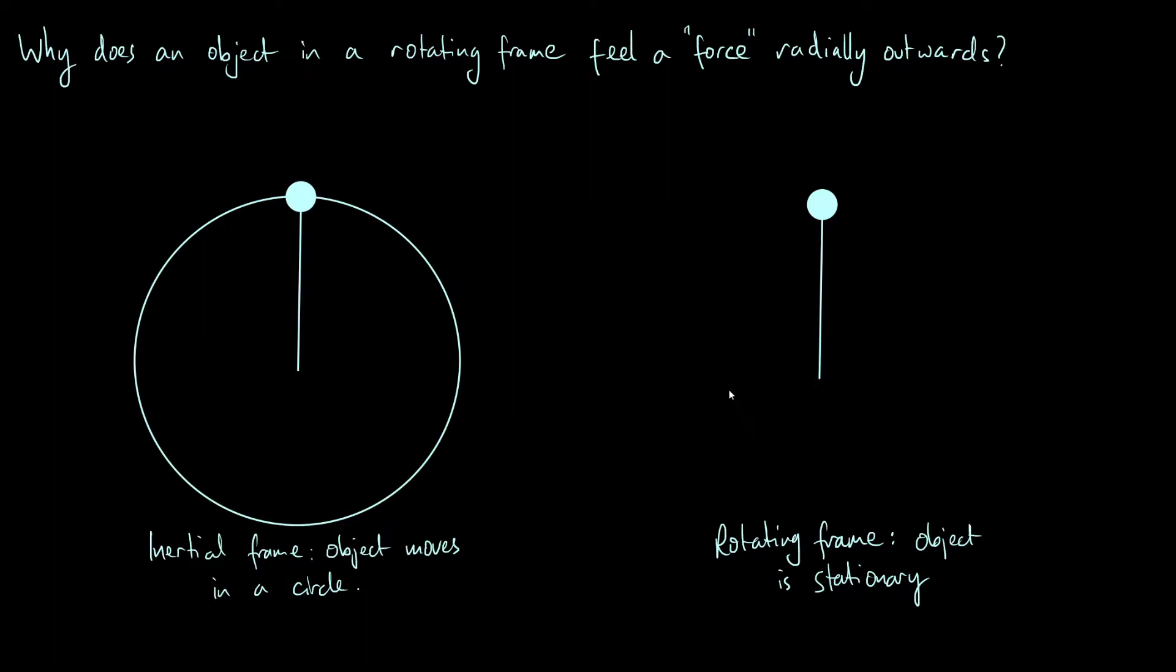So to illustrate the idea we're going to consider a scenario which is an object moving in a circle in an inertial frame. So this could be like a planet orbiting a star on a circular orbit or it could just be something like holding a ball on the end of a string and spinning it around.